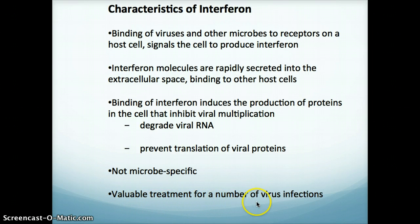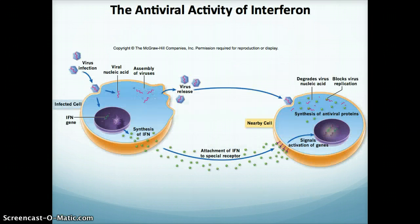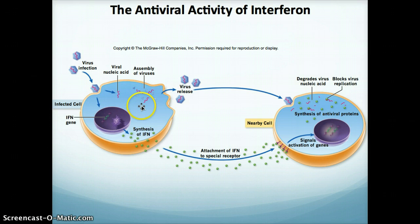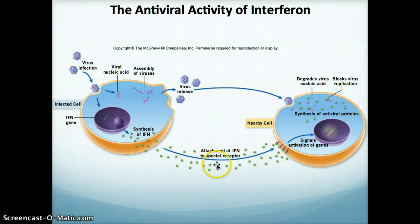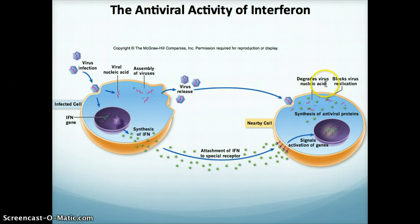This diagram from your book shows the antiviral activity of interferon. Starting on the left with an infected cell, the virus infection comes in releasing nucleic acid and starting to assemble new viruses. This cell has the interferon gene, which is stimulated by infection, producing interferon that is sent out into extracellular space. It then attaches to a special receptor on a neighboring cell, activating genes in that uninfected or newly infected cell to degrade the virus nucleic acids and block virus replication — a great way of communicating with neighboring cells through interferon.